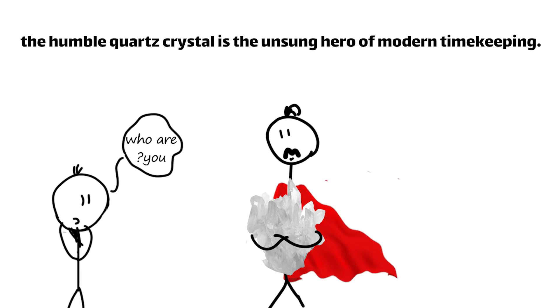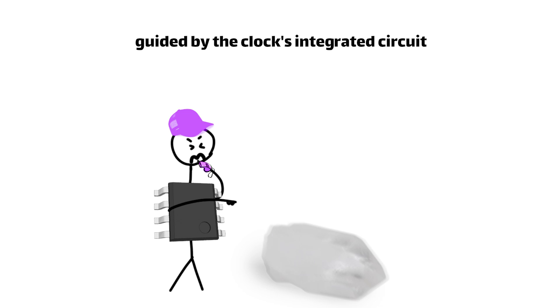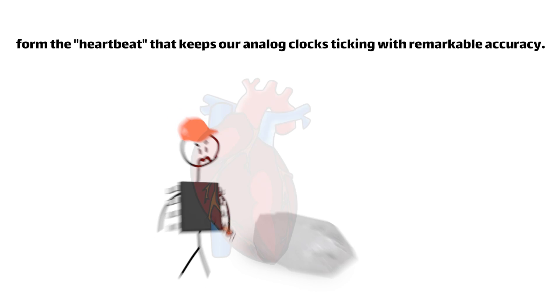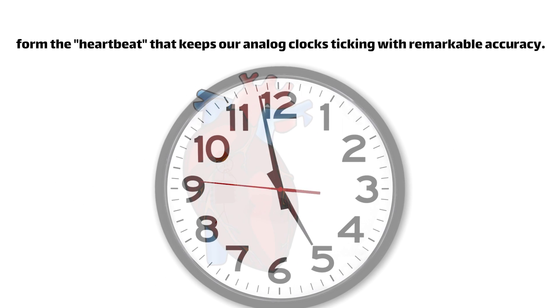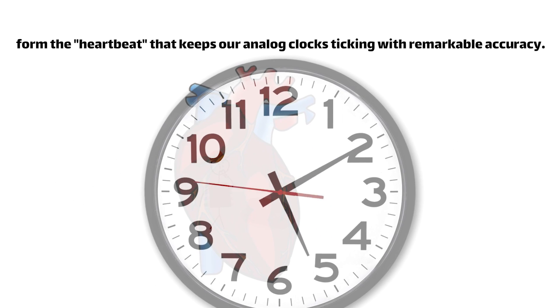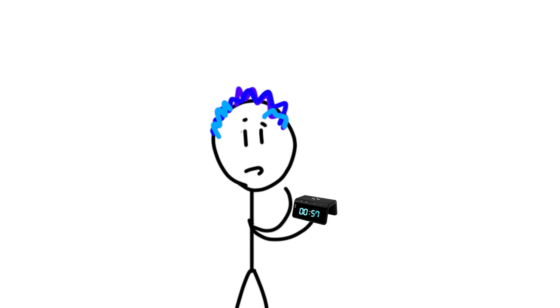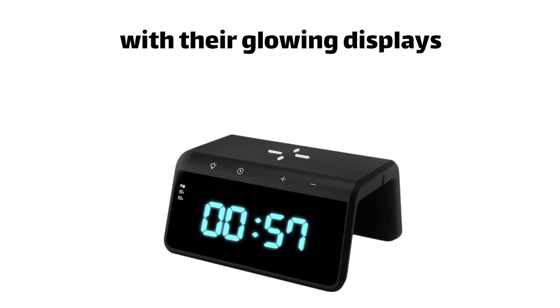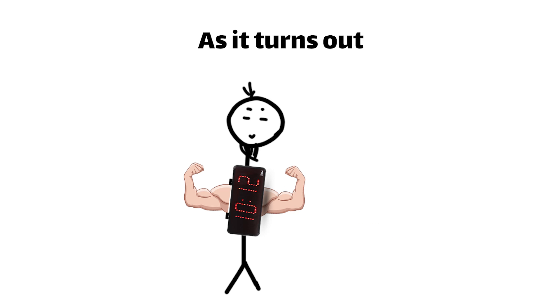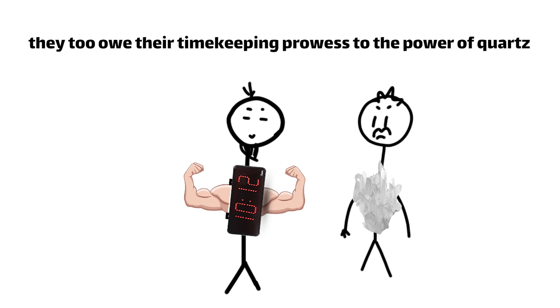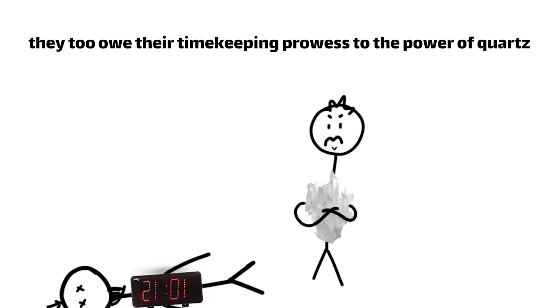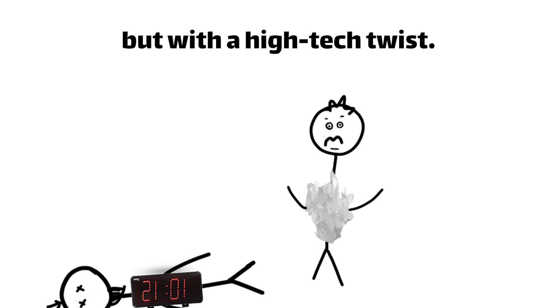As we've seen, the humble quartz crystal is the unsung hero of modern timekeeping. Its steady vibrations, guided by the clock's integrated circuit, form the heartbeat that keeps our analog clocks ticking with remarkable accuracy. But what about digital clocks, with their glowing displays and split-second precision? As it turns out, they too owe their timekeeping prowess to the power of quartz, but with a more high-tech twist.